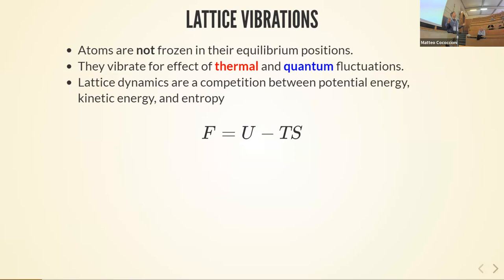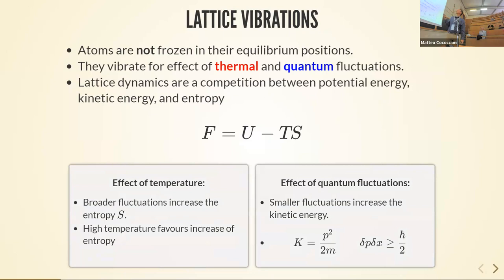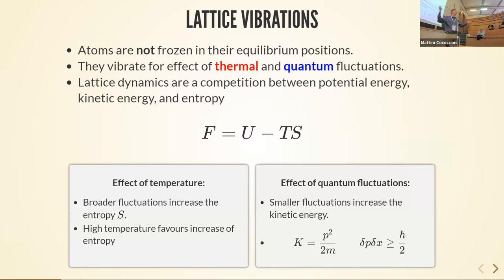The entropy means we have a probability distribution of finding ions at some position. The broader this probability distribution, the higher the entropy. There is a competition: temperature wants to maximize entropy, which means spreading the probability distribution, but doing so samples higher-energy ion positions, increasing the internal energy. At higher temperatures, entropy prevails and atoms displace more from equilibrium.